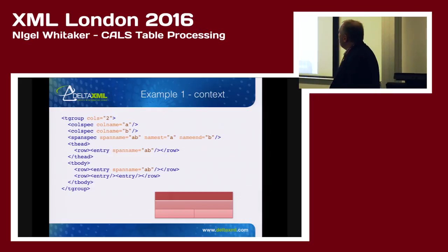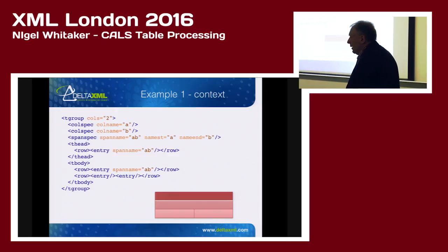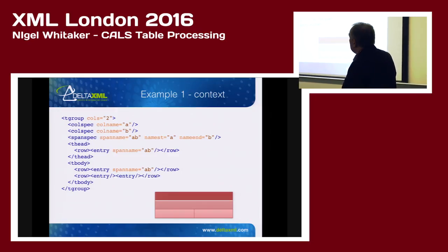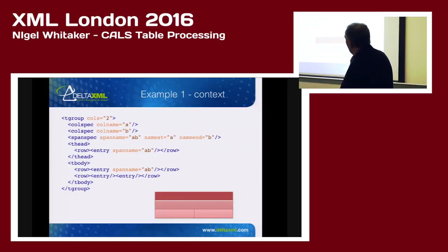Let's start with an example. Here's a CALS table — it's actually a tgroup. Most tables really start at this tgroup element. You can put titles and other metadata around the tgroup. You declare the number of columns, and you can define these things called column specs. In some cases you can give the column numbers; in other cases you can name them.